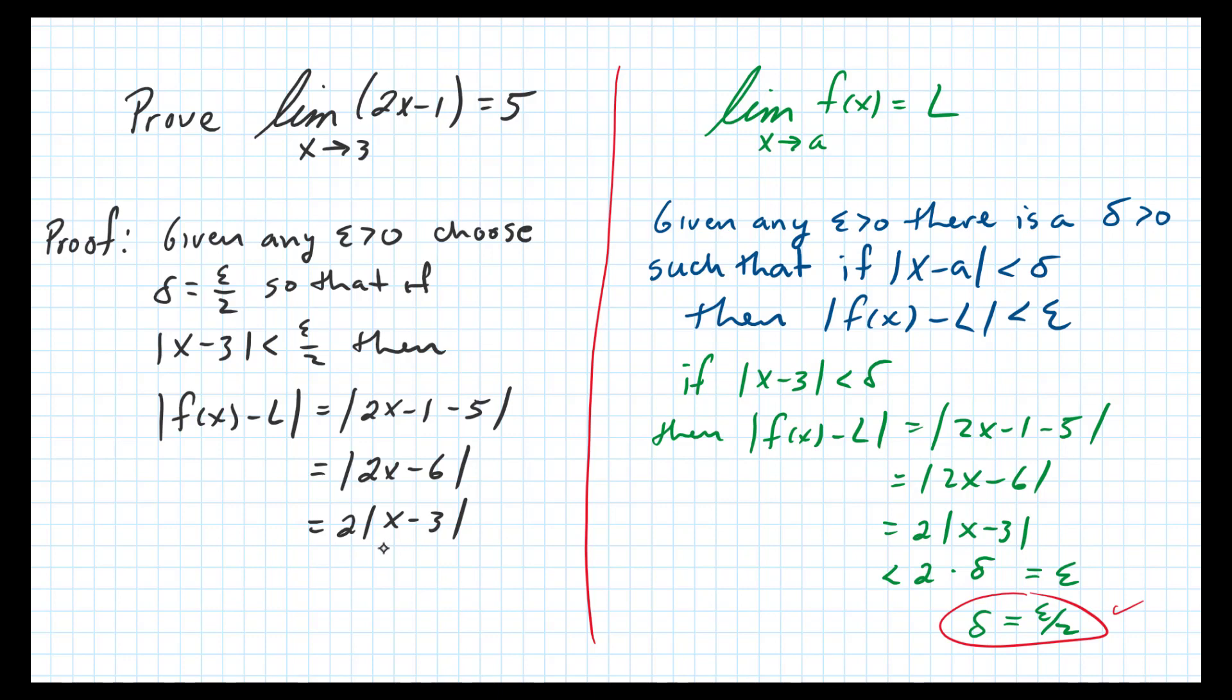So now at this point, I know absolute value of x minus 3 is less than epsilon over 2. And then the 2's cancel, and we get out epsilon. And that's what we were trying to prove. We were trying to prove f(x) minus L is less than epsilon.